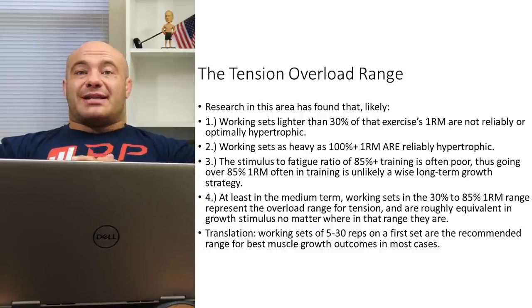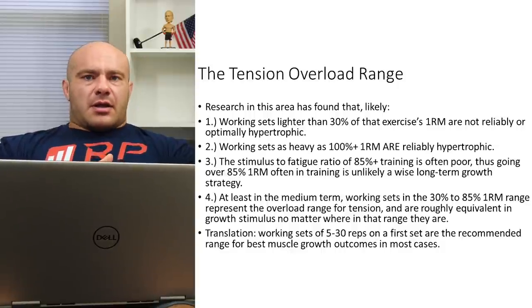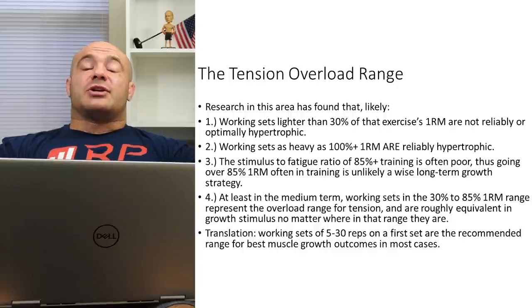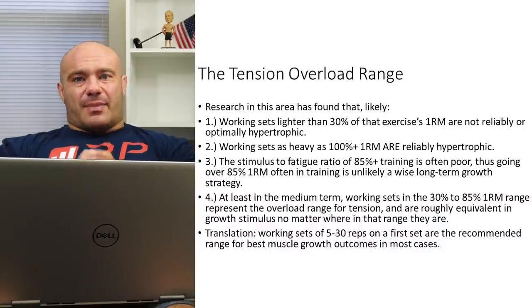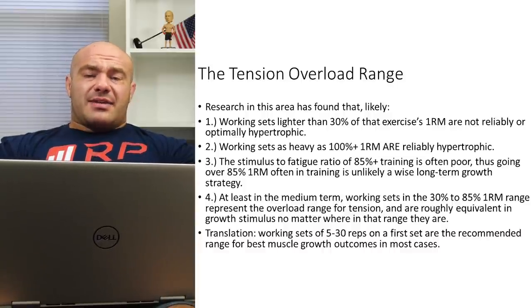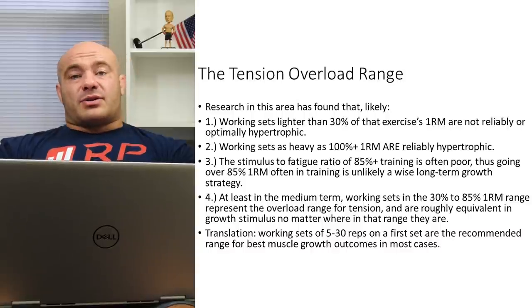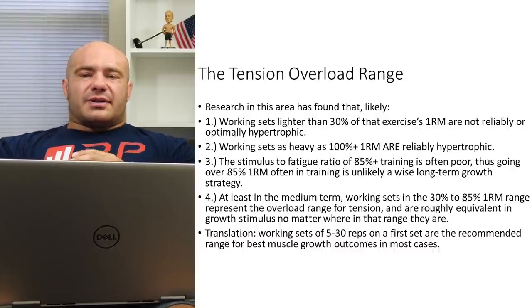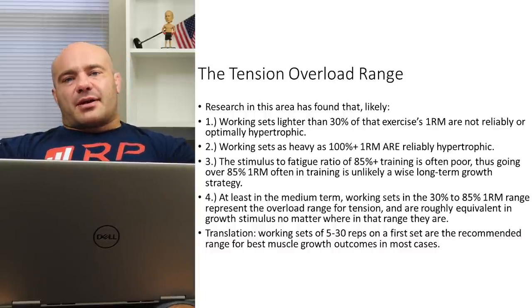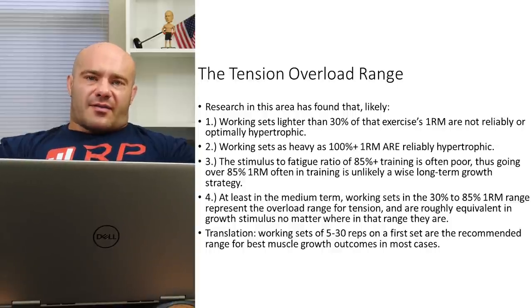If you try training at 95% 1RM, after several training sessions you'd start to accumulate so much fatigue you can't perform anymore — you start to get weaker, likely get injured, and your hypertrophic stimulus actually declines at a biochemical level. So at least in the medium term, working sets in the 30% to 85% 1RM range absolutely provide overload stimulus. At least in the medium to long term, anywhere between 30% and 85% of 1RM causes roughly an equivalent amount of hypertrophy.